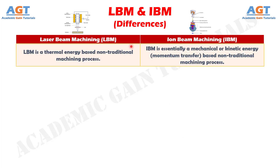Difference number 1. Laser beam machining is a thermal energy based non-traditional machining process, whereas ion beam machining is essentially a mechanical or kinetic energy, momentum transfer, based non-traditional machining process.